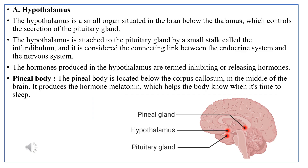The very first gland is the hypothalamus gland. This hypothalamus gland is a very small organ situated in the brain region of the human body, below the thalamus, and it controls the secretion of the pituitary gland. The hypothalamus is also attached to the pituitary gland by a very small stalk called the infundibulum, and this is considered a connecting link between the endocrine system and the nervous system.